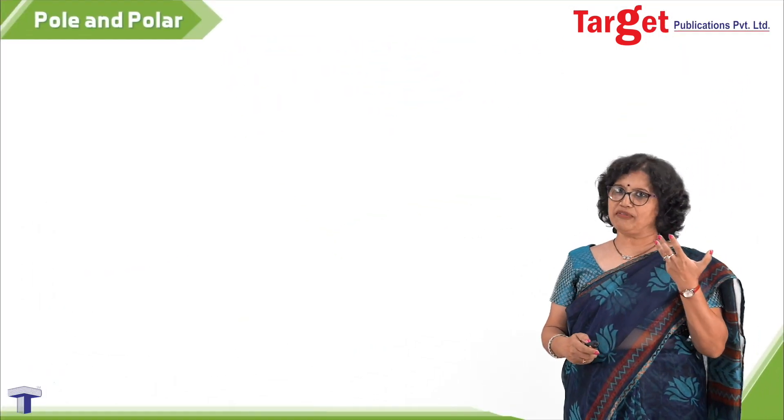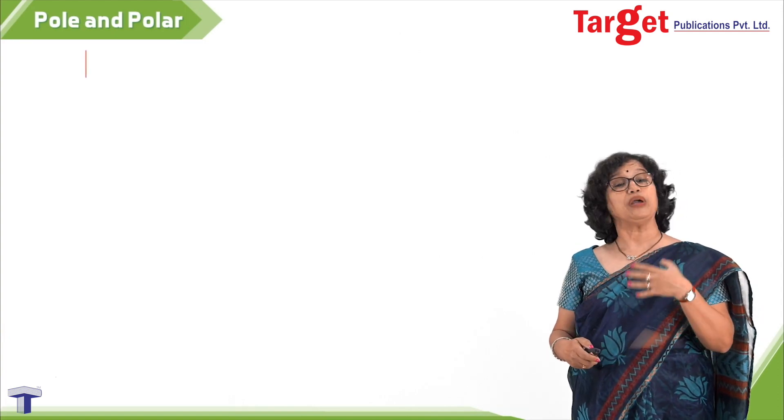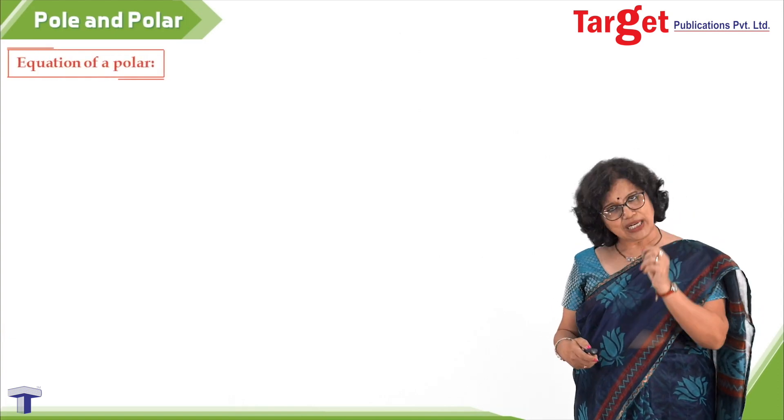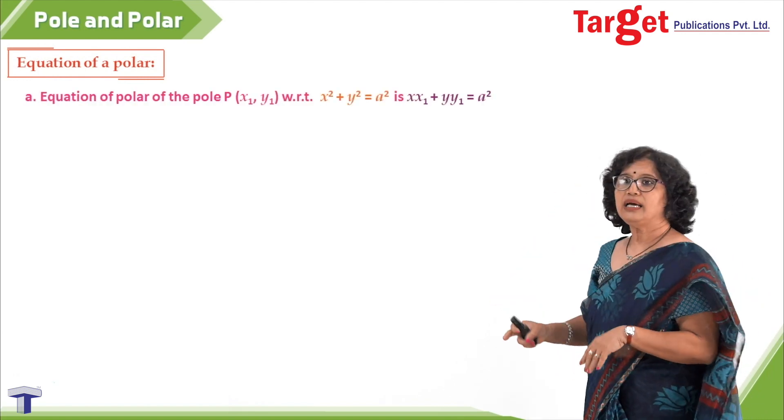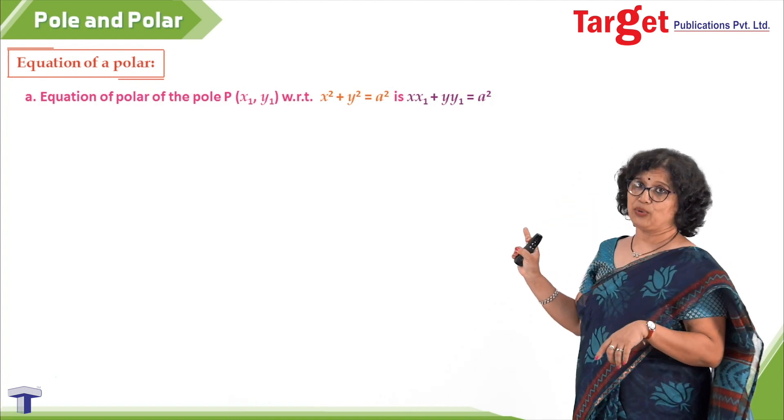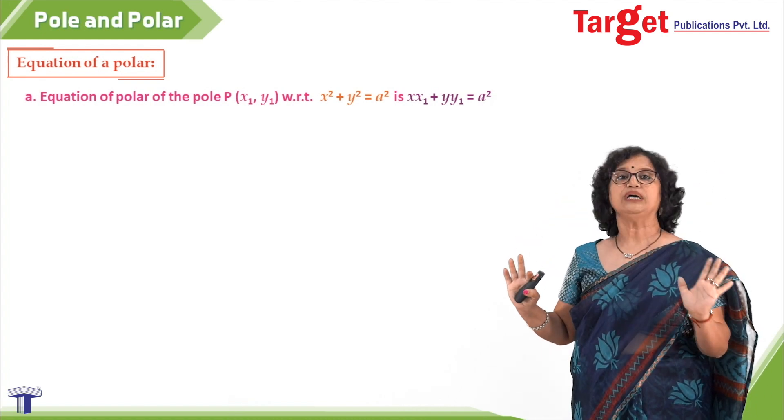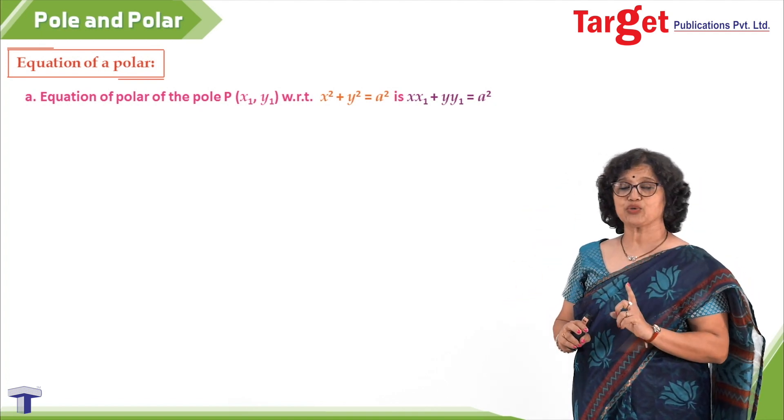Now, of course, you all must be realizing this, that we should be in a position to write the equation of the polar. Let us start with the equation of the polar. If a pole is given as (x₁, y₁) and circle is x² + y² = a², straight away I am giving you the equation of the polar, which is xx₁ + yy₁ = a².